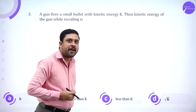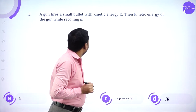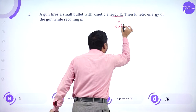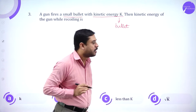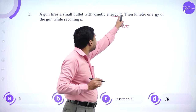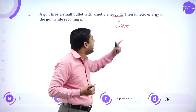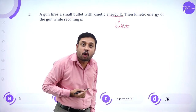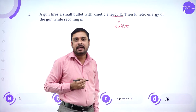A gun fires a small bullet with kinetic energy K. So this is the kinetic energy of the bullet. The gun is firing a small bullet whose kinetic energy is K. I have to relate the kinetic energy of the gun with that of the bullet while recoiling.